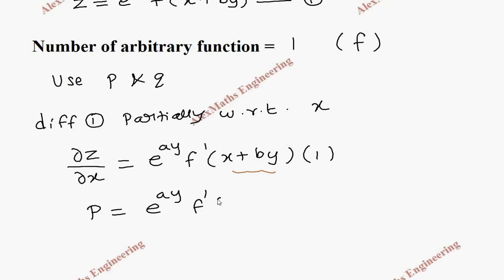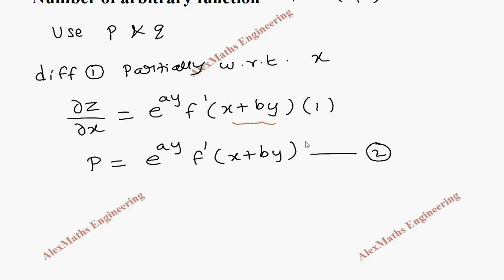So let's rewrite this: P = e^(ay) · f'(x + by). Let's keep this as the second expression.